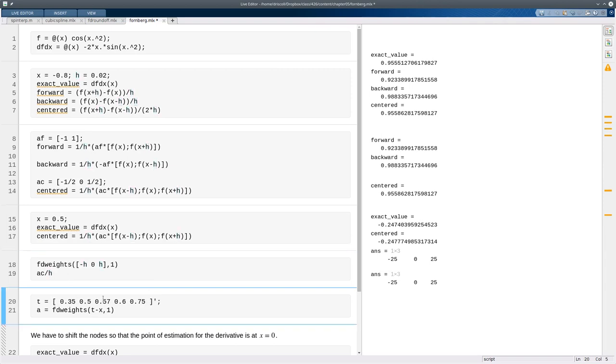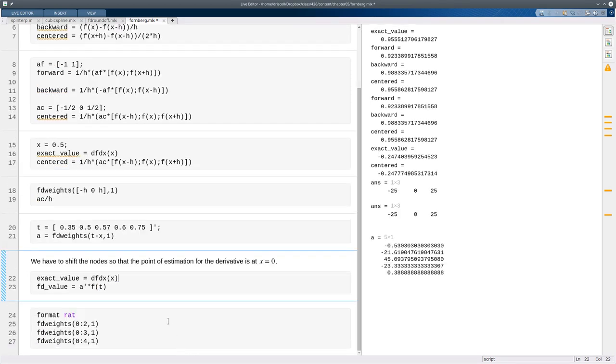Here's a set of non-equally spaced nodes, and again, if I want the derivative at x, I have to subtract x from those nodes because fdweights is always producing the derivative at zero, and I have to use the shift invariance of finite differences. So here they are, and I can use them much the same way. Note that this is a column vector, unlike the row vectors I was using before, so I have to use a transpose on the weights to get an inner product between the weights and the values of f at the nodes.